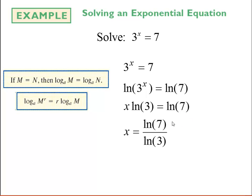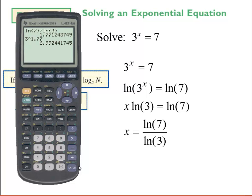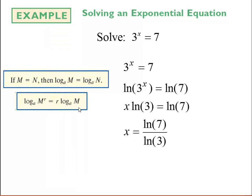To check, I take out my calculator: ln of 7 divided by ln of 3 gives approximately 1.77. Then I can verify that 3 raised to the power of 1.77 is approximately 7 — I get 6.99 because of rounding. That's a quick way to check.